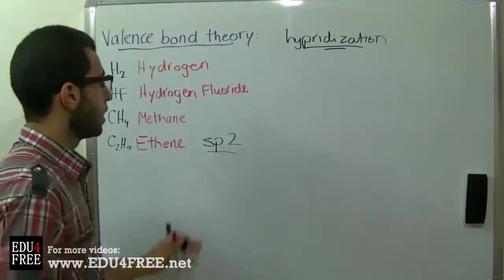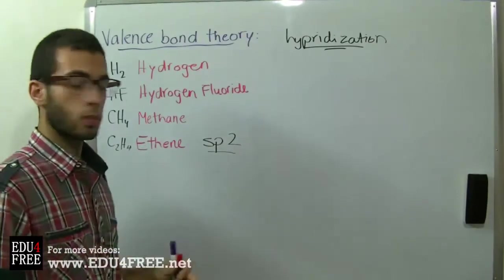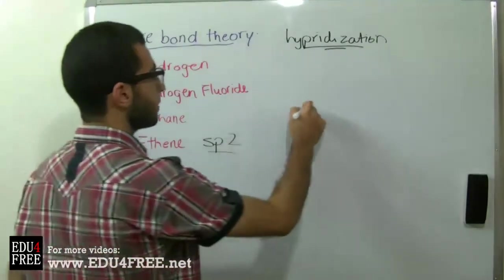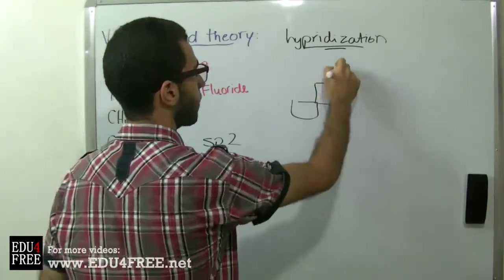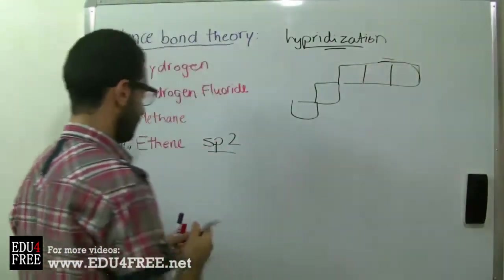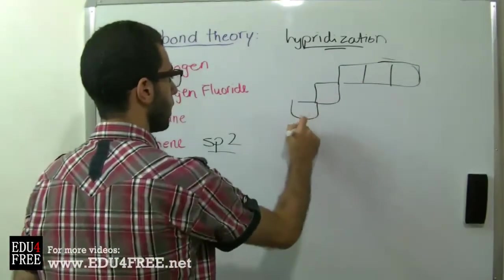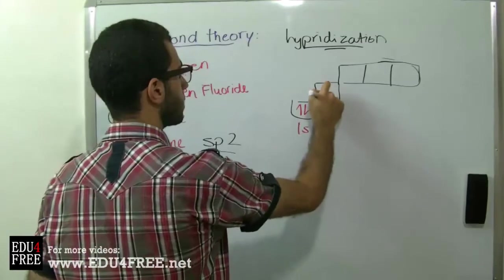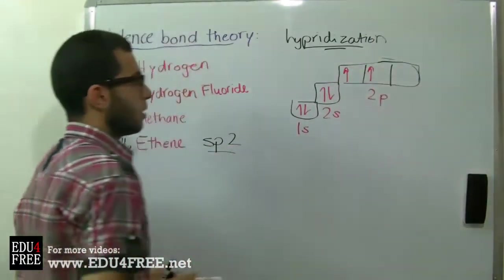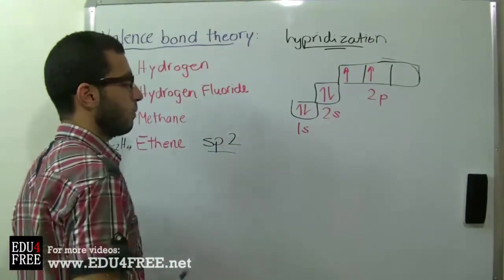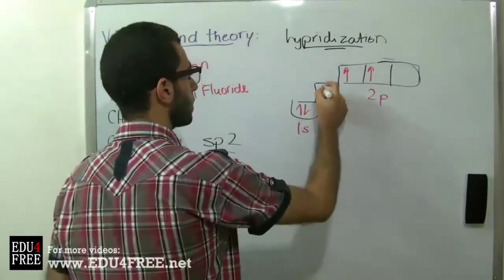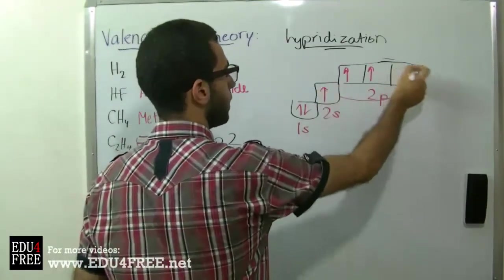The hybridization in this case is called sp2 hybridization. From the name, we can conclude that we use one s sub-level orbital and two p sub-level orbitals. The electronic configuration of carbon is 1s2, 2s2, and 2p2. The first step, as in methane, is that an electron jumps from the 2s orbital to the vacant pz orbital.